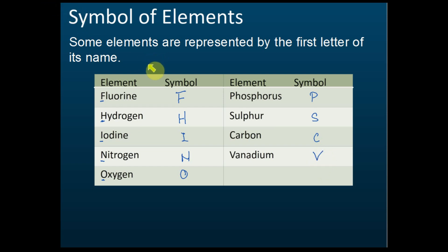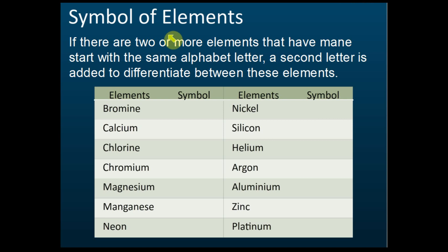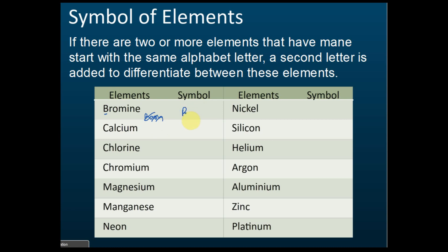For some elements, the first letter is already taken by another element. For example, B is already the symbol for boron. Since boron is already using B as its symbol, bromine cannot use B anymore. So scientists use the first two letters — B and R — as the symbol for bromine, giving us Br, not B.